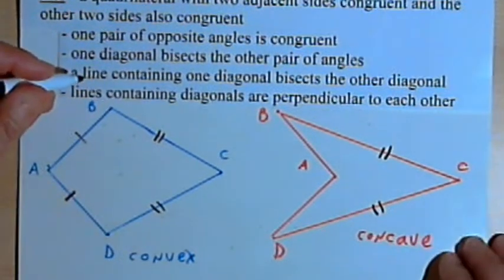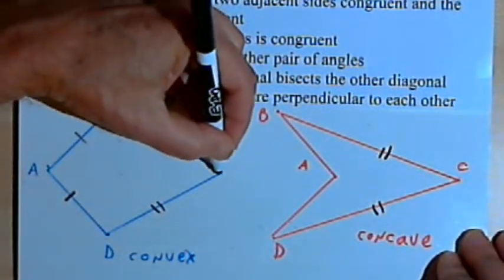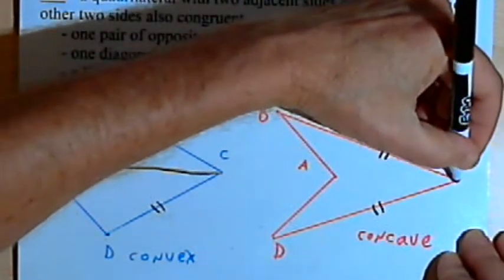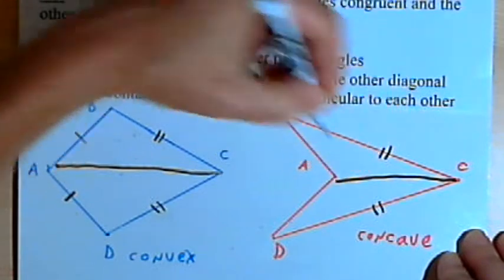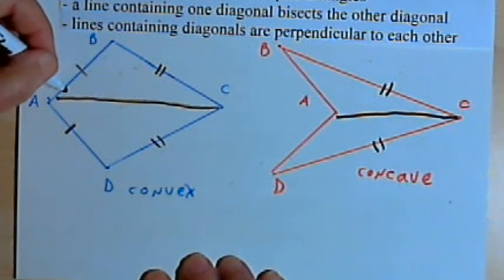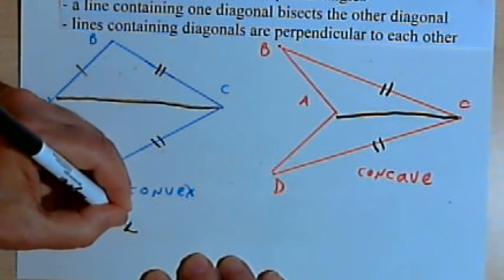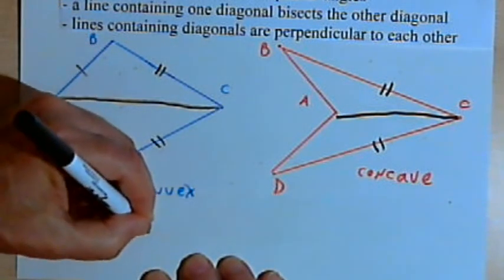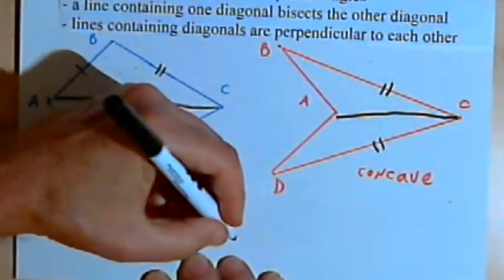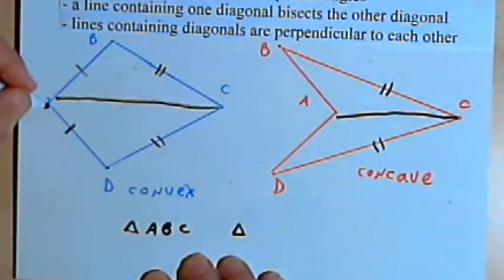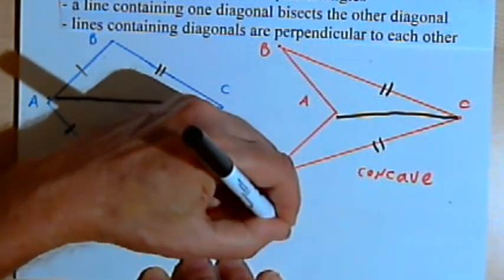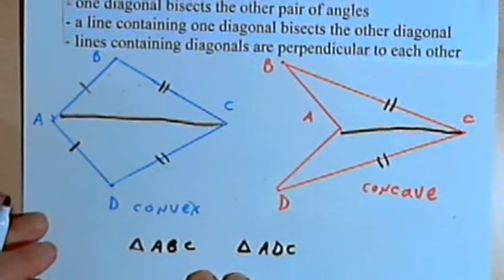So what I'm going to do to prove it is draw a diagonal connecting A and C. I'll do that for both of these kites. Now in both cases, what I've done is formed two new triangles. I've formed triangle ABC in both cases, and I've formed triangle ADC. And I want to show that those two triangles are congruent.